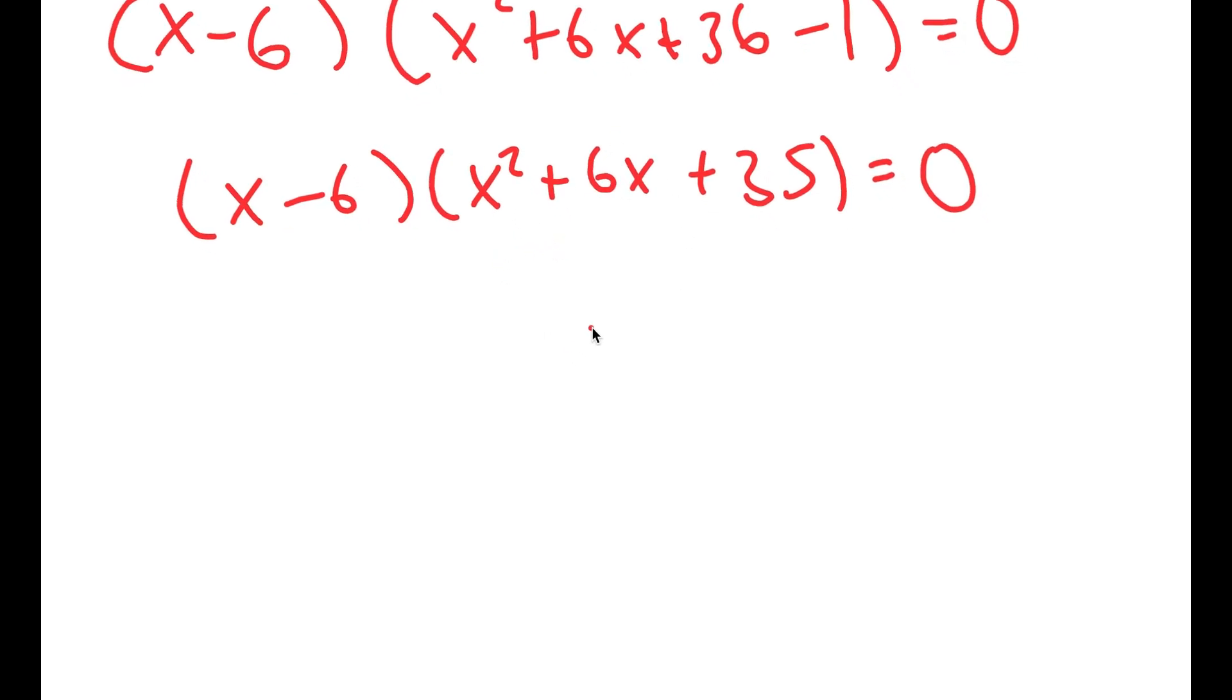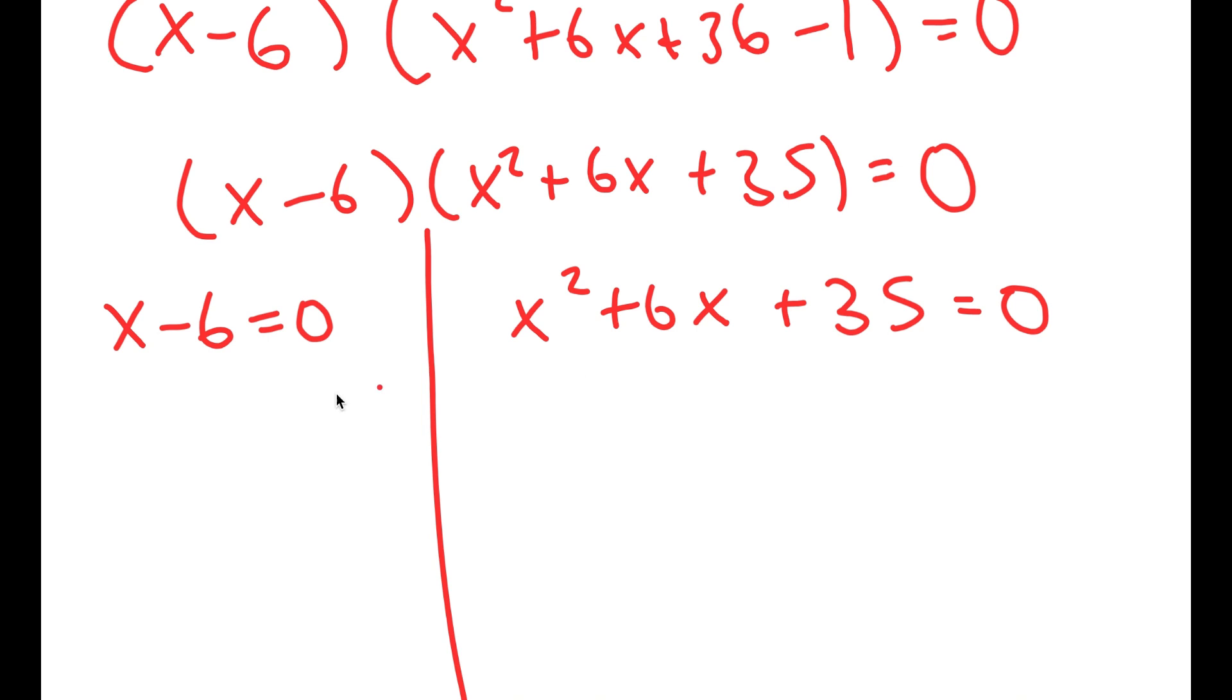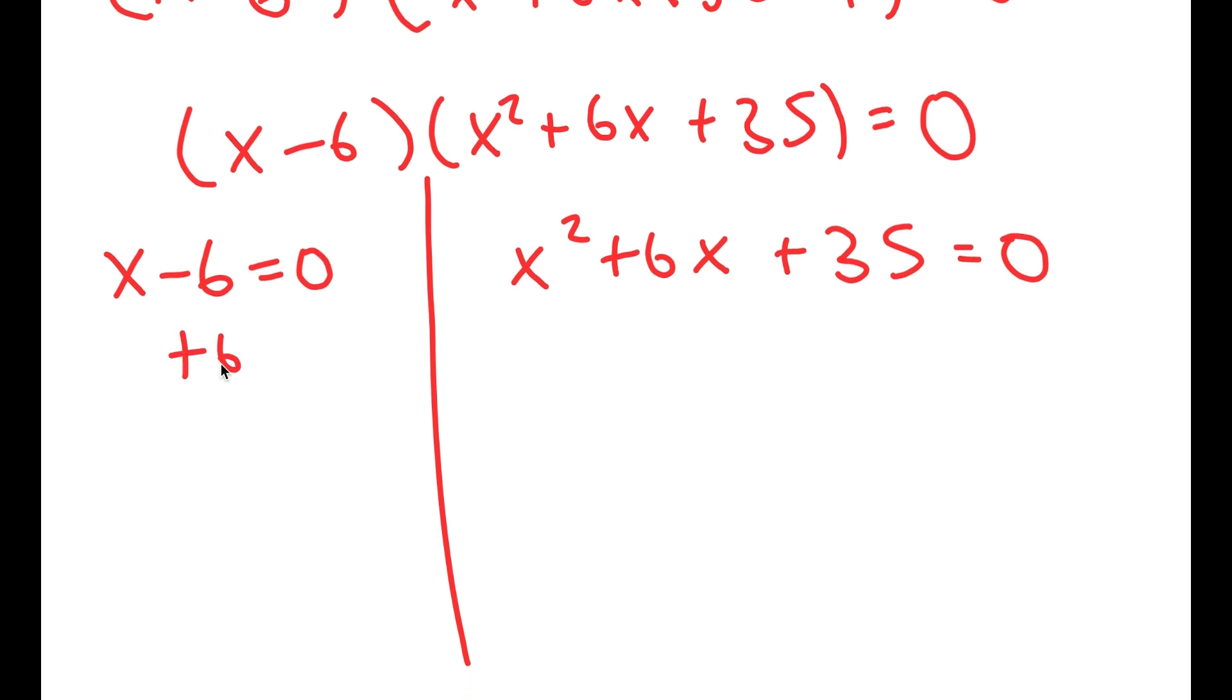So now from here, I get two equations. I get x minus 6 is equal to 0 and x squared plus 6x plus 35 is equal to 0. So x minus 6 equals 0. For this, I can add 6 on both sides. So I get x is equal to 6. And this is one solution of x.